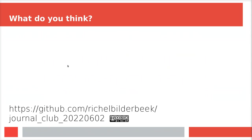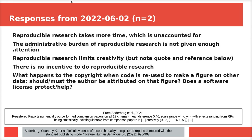In the journal club discussion, one claim was that reproducible research takes more time, which is unaccounted for, and the administrative burden is not given enough attention. There's no glory or incentive to do reproducible research — this is changing, but it's still true. As for whether it takes extra time: following good practices like test-driven development is actually known to speed up development. If you don't test, you might say that's quicker, but that's false — though it's an argumentation some people make.